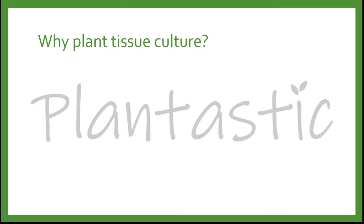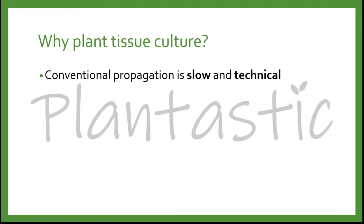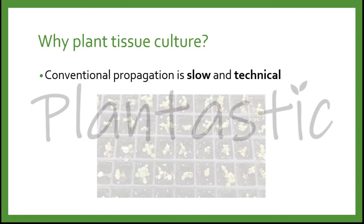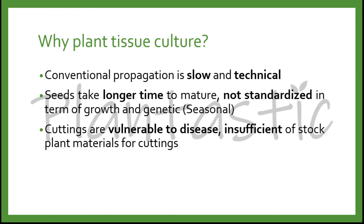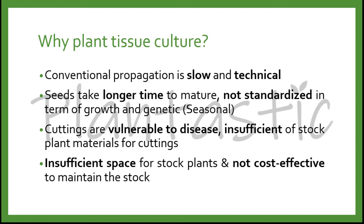Why is there a need for plant tissue culture? This is because conventional propagation, such as cutting and air layering, is slow and technical. The seeds take longer time to mature and it is not standardized in terms of growth and genetics. Moreover, the seeds are seasonal production of a plant. Conventional cuttings are vulnerable to disease and pests, causing insufficient stock plant material for cuttings. There will be insufficient space for the stock plant and it is not very cost effective to maintain a stock plant.